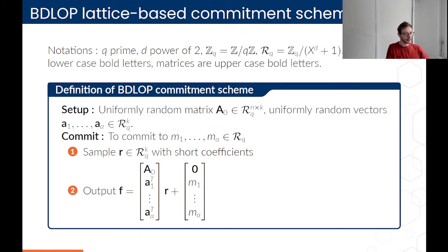The commitment is made of two parts: the top part which is A0·R, and then for every message you send A transpose times R plus the message.